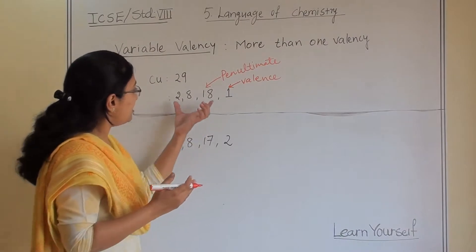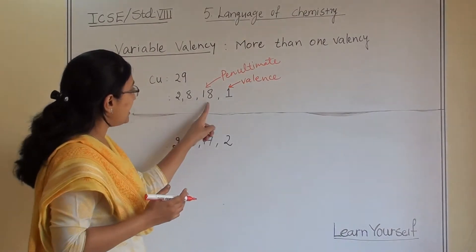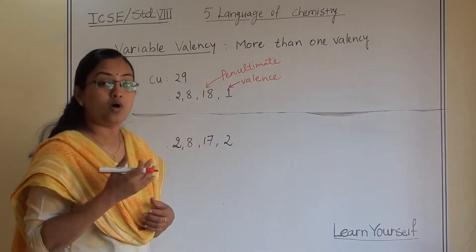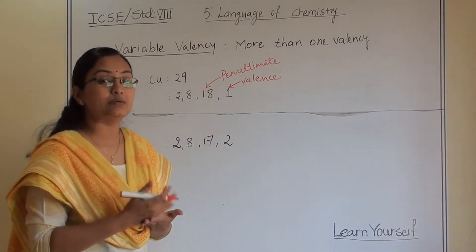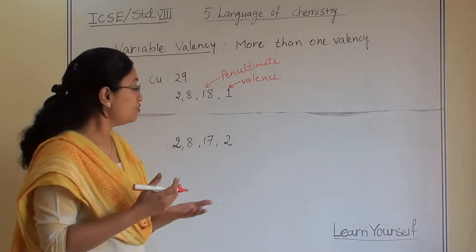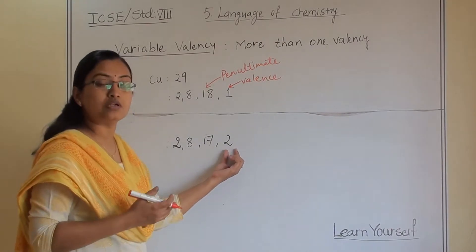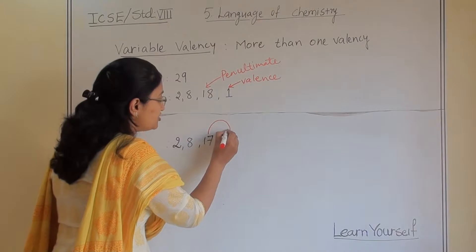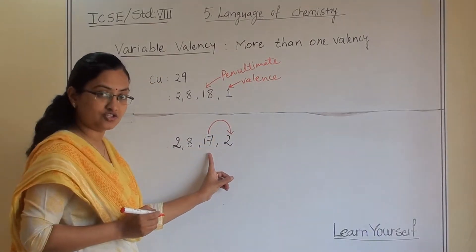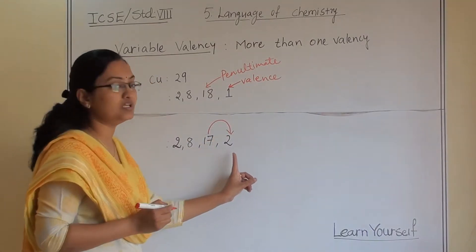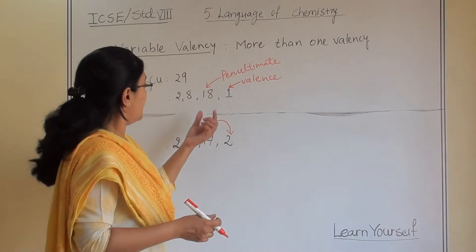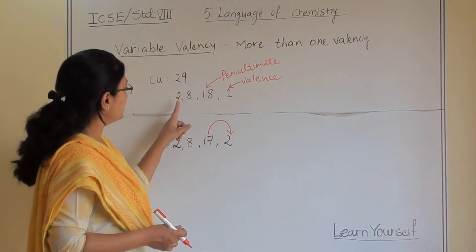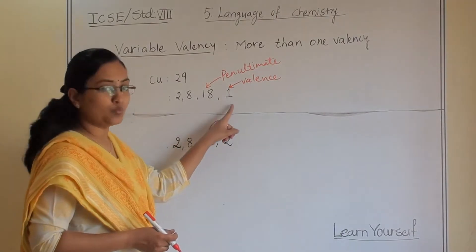So if you see here, in 18 and 1, it has only one electron. So sometimes, to become stable, to make two electrons in the last shell, one electron will jump from the second last shell to the last shell. In the first electronic distribution it will be 2, 8, 18, 1.